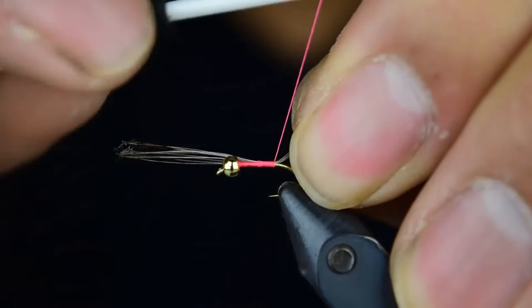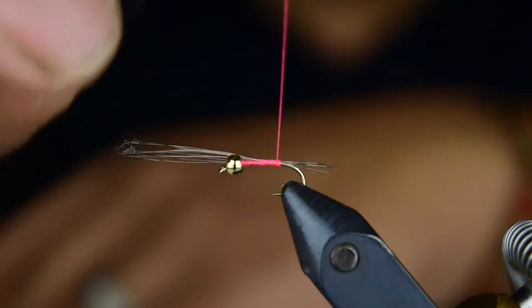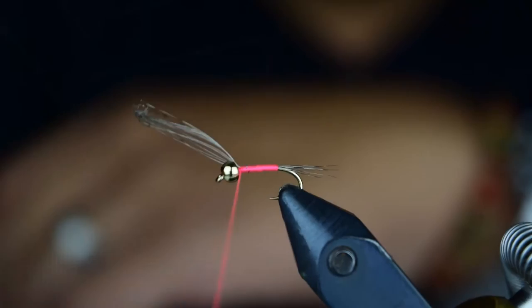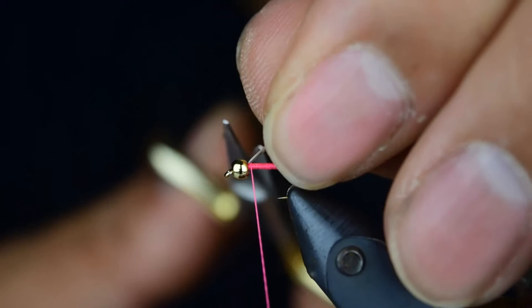So we'll go ahead and hold them here and wrap back, lifting up on them slightly just so that way we can keep them on the top of the hook. You don't have to go back very far here, that's about far enough. We're going to go ahead and wrap these fibers right into the bead there.